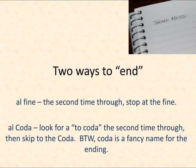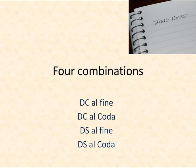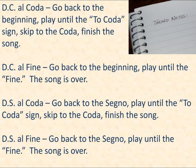Al Fine means that the second time you go through, you're going to stop right there. Al Coda means that the second time you go through, you're going to skip to where the coda is. These are not true repeats — it's go back and replay one specific part. Because we have the DC, DS, Al Fine, and Al Coda, we actually have four available combinations.